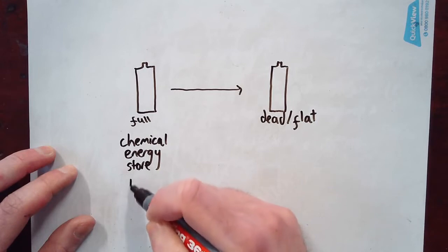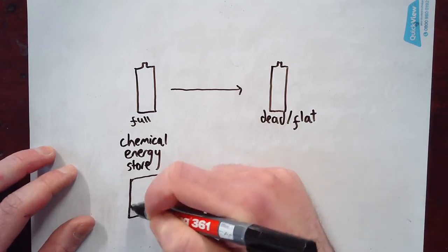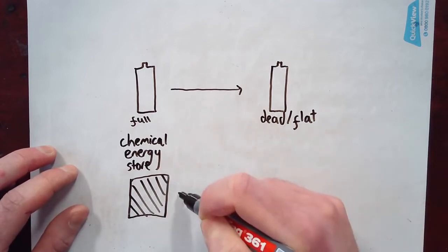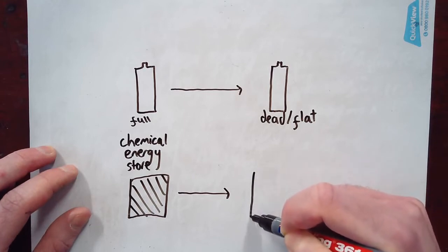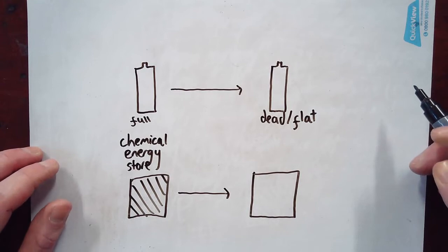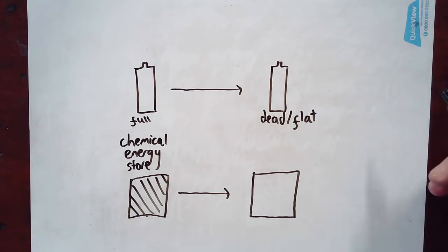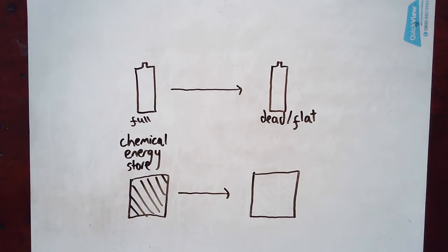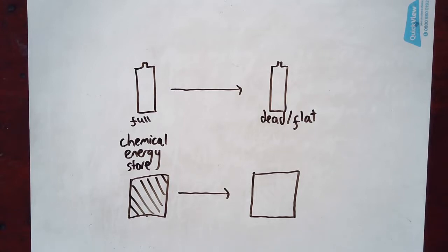We could draw it as a box. Originally this box is packed full of energy, but I used that battery to power a torch and now that box is empty. We also talk about the chemical energy store when we talk about food — we eat food and the energy stored up in food is stored in its chemical energy store. Generally, when we talk about humans doing things or moving things with their muscles, we talk about the chemical energy store because it all comes from glucose. Also, when it comes to chemical reactions that produce heat — like burning wood or burning gas in a Bunsen burner — we talk about the fuel as having lots of energy in its chemical energy store.